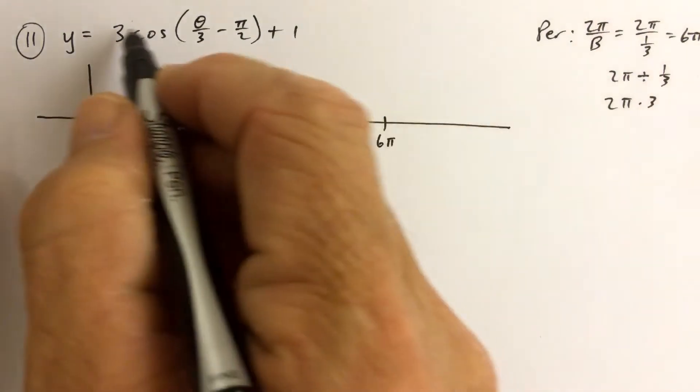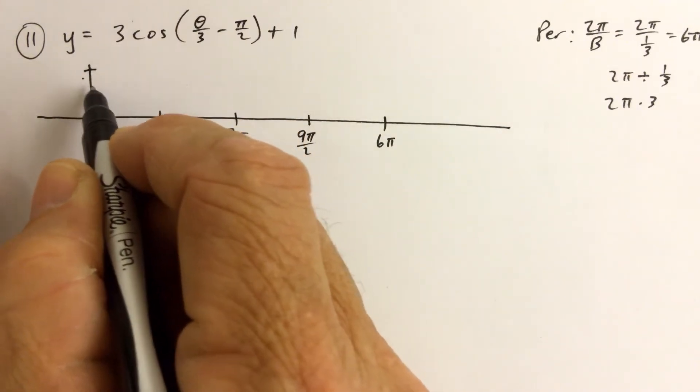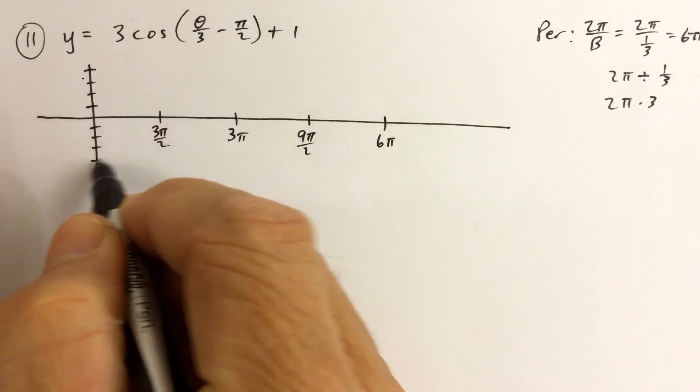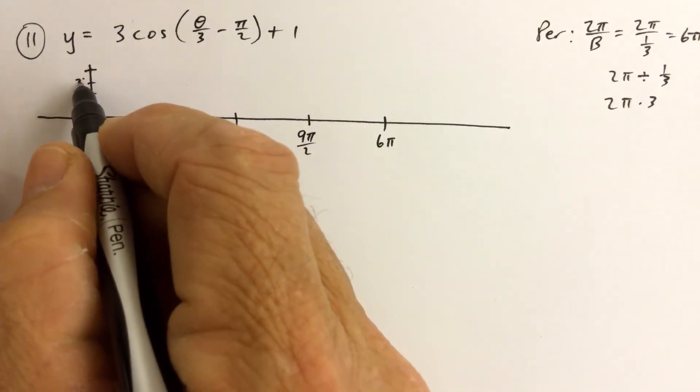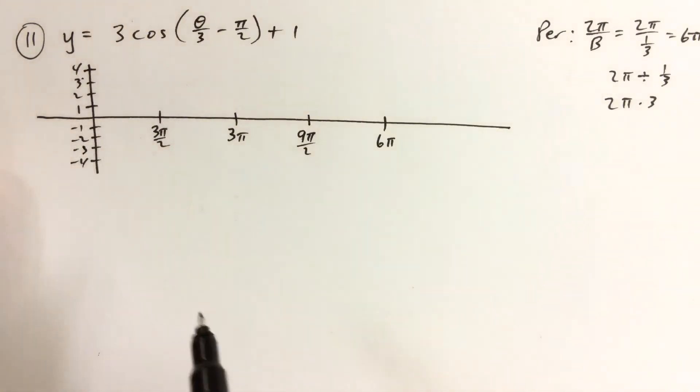We know that the amplitude is 3. Let's do this: 1, 2, 3, 4, because I know I'm going to have to move up one. 1, 2, 3, 4. So 1, 2, 3, and I'll just mark that.